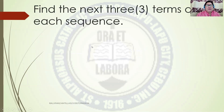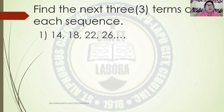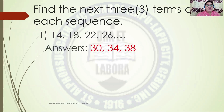Find the next 3 terms of each sequence. The next 3 terms are 30, 34, and 38. The Common Difference is 4. So 26 plus 4 is 30, plus 4 is 34, plus 4 is 38.